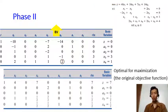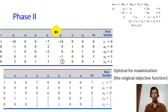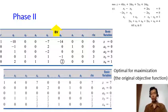You should now be able to solve a linear programming problem using the two-phase simplex method. You have learned at least three methods: the ordinary simplex algorithm, the Big M method, and the two-phase simplex method. Which method you choose depends on the type of constraints — if all constraints are less-than-or-equal-to, you may use the ordinary simplex; otherwise, use Big M or the two-phase simplex method.